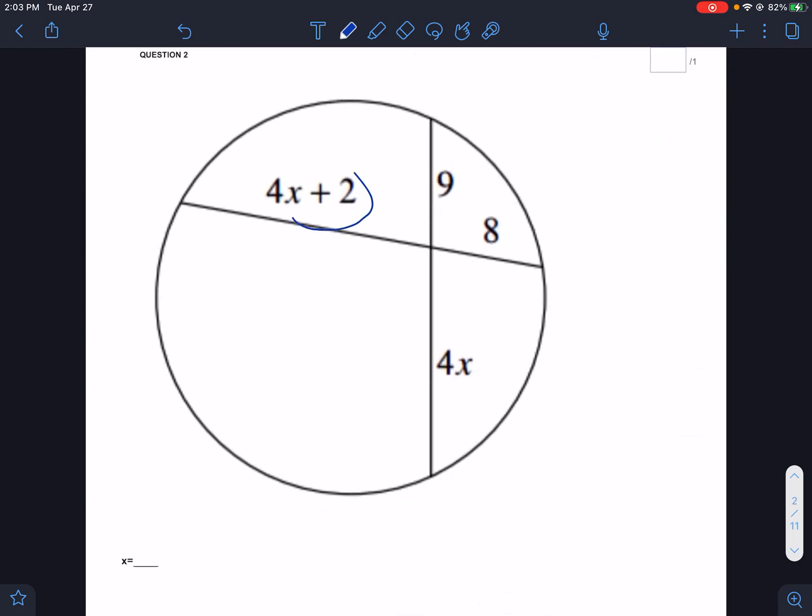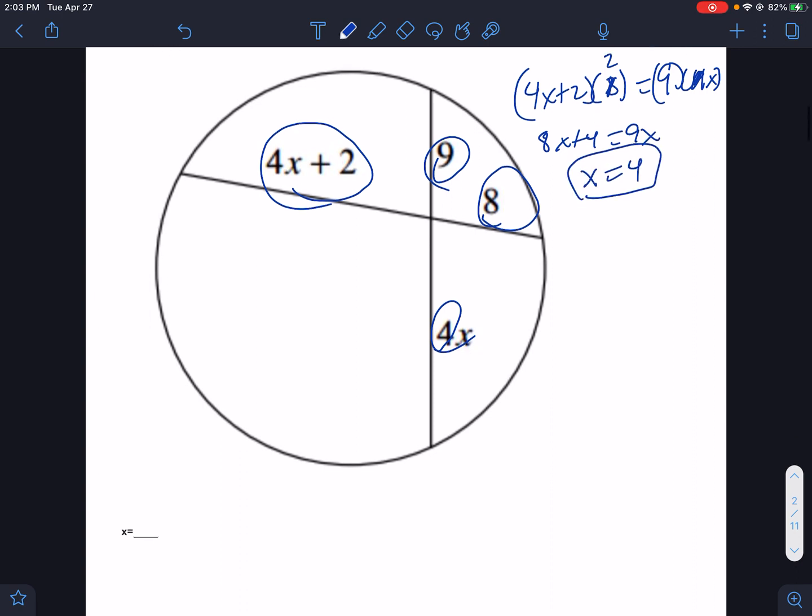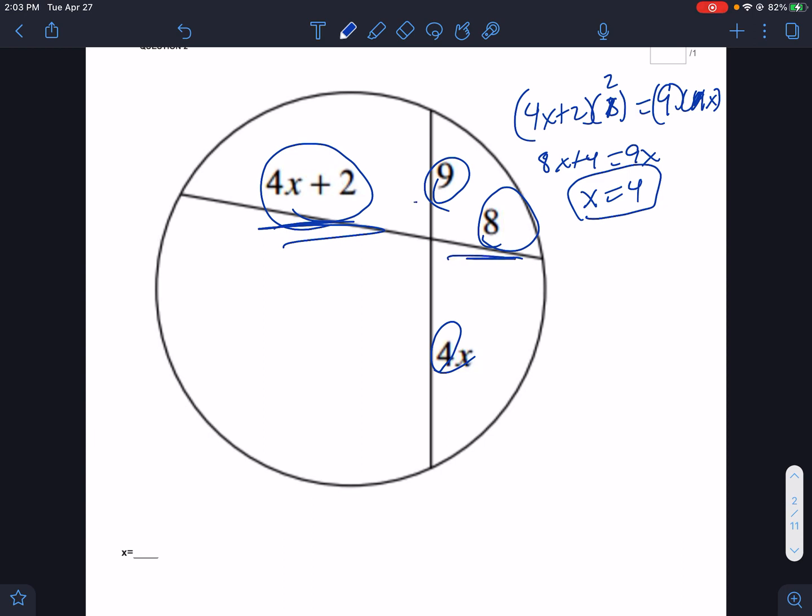Chord-chord rules. Part times part, so 4x plus 2 times 8 equals part times part, 9 times 4x. I like to divide first when possible. If I divide both sides by 4, this becomes 2. And that becomes a little bit easier, so that would be 8x plus 4 equals 9x, so x equals 4. But part times part equals part times part was the premise.